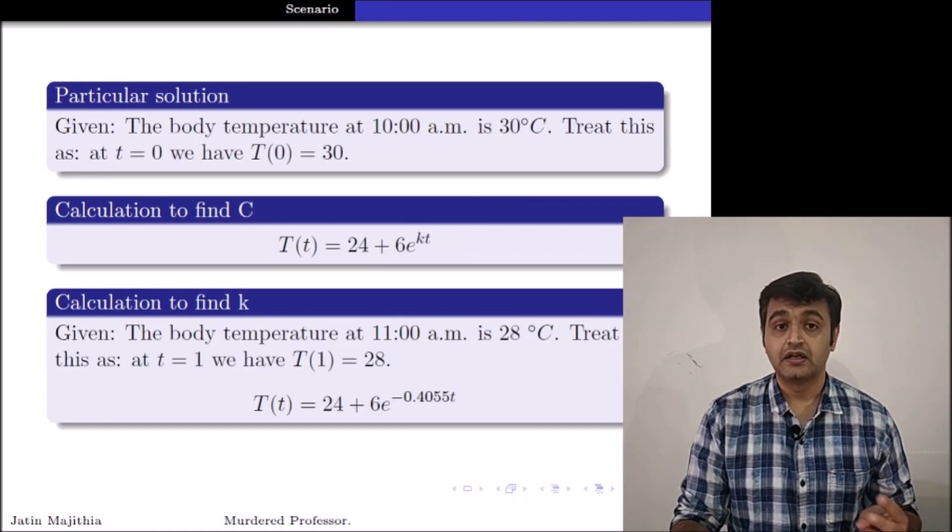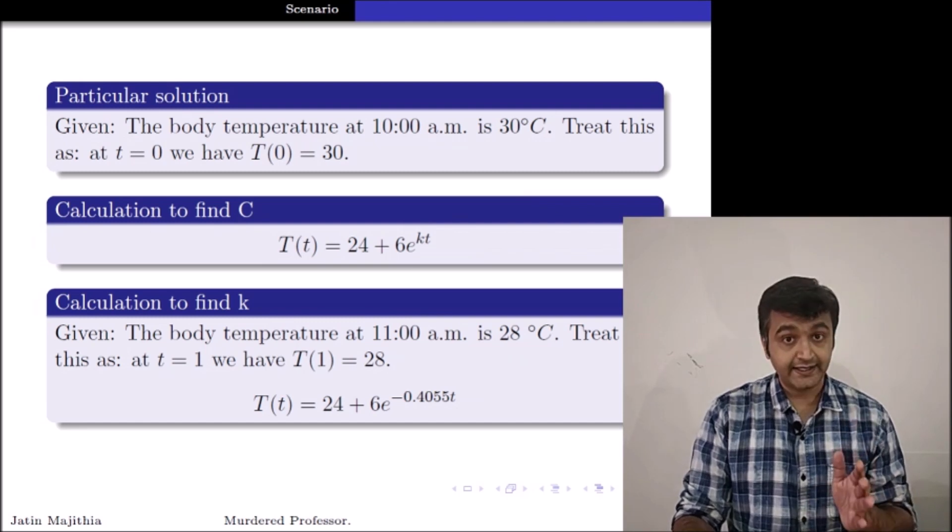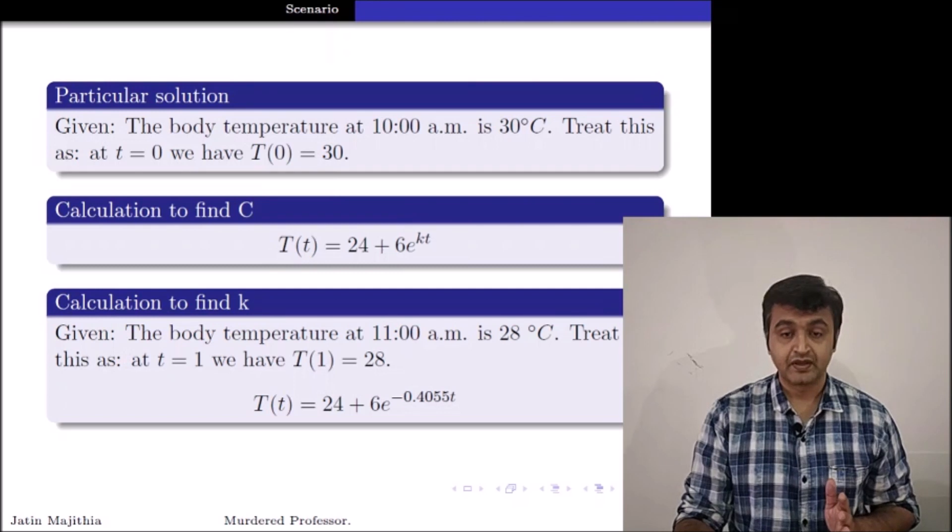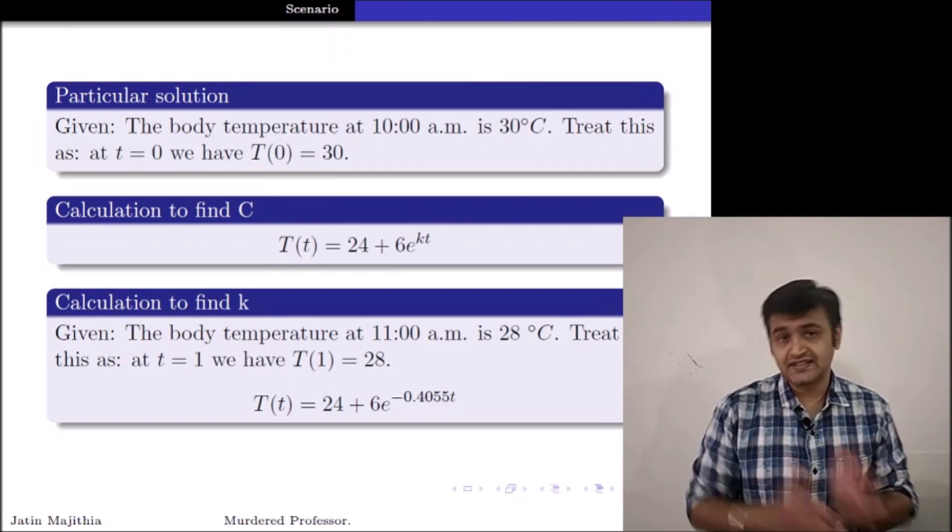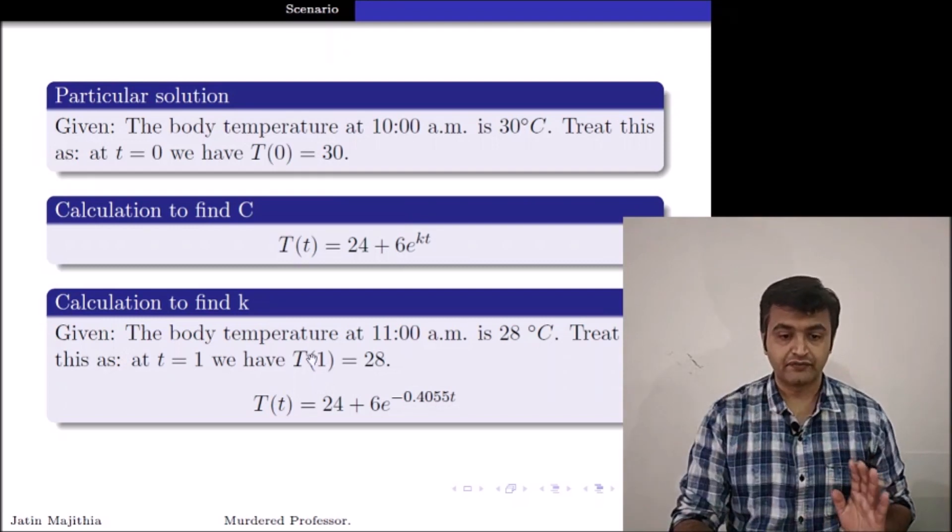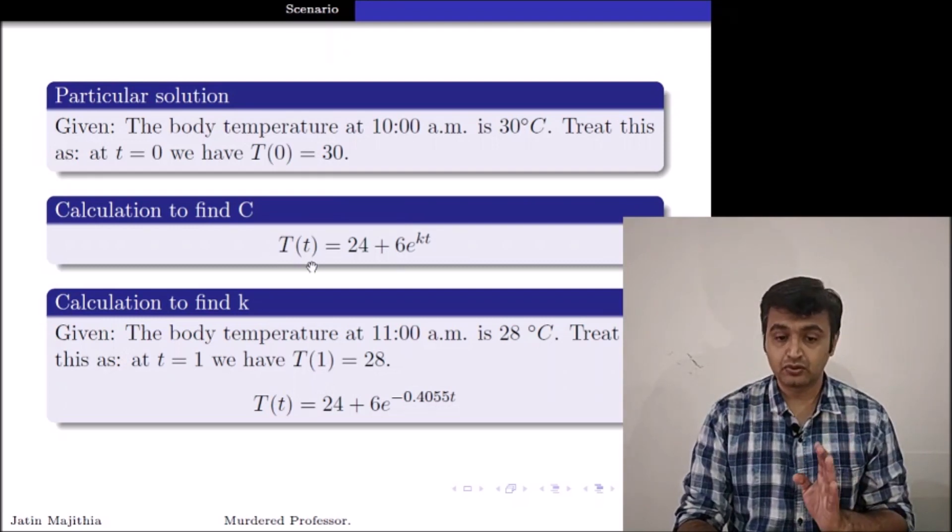So my job is to find what is K and what is C. Now, I will use the remaining two data which police took. So at 10 AM, they took the temperature of my body which was 30 degrees Celsius. So if I represent T equal to 0 as 10 AM, when my t is 0, my temperature is 30 degree.